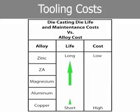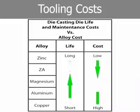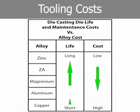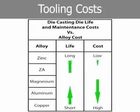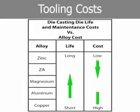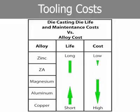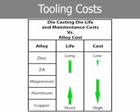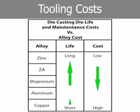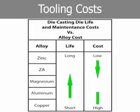Die deterioration occurs very rapidly relative to other die casting alloys when copper alloys are cast, due to the very high die casting temperature of copper alloys and its effect on the die steel. Die deterioration also occurs rapidly when aluminum alloys are cast, due to the high casting temperature of aluminum alloys and the tendency for aluminum to attack steel. Magnesium alloys are cast at approximately the same temperature as aluminum, but they do not exhibit the same tendency to attack the die steel. Die life is therefore longer and die maintenance costs are lower than for aluminum alloys.